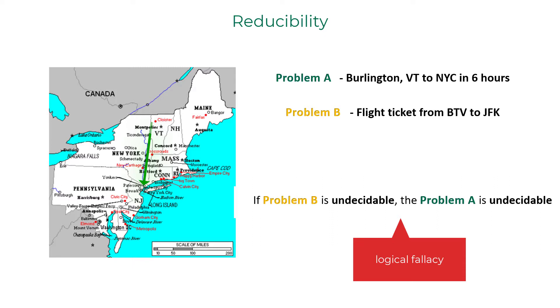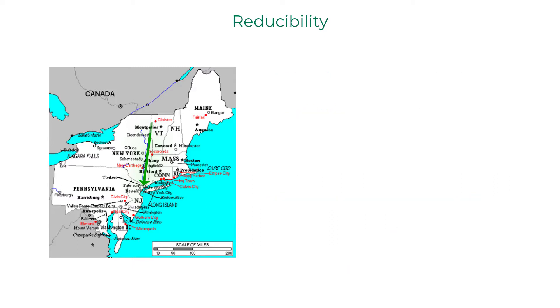The other logical fallacy is that when A reduces to B and A is solvable, it does not mean B is solvable.